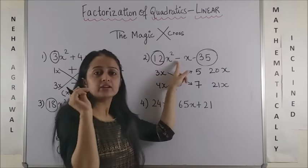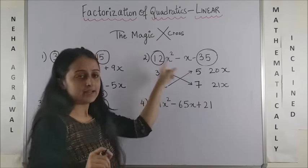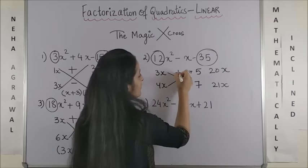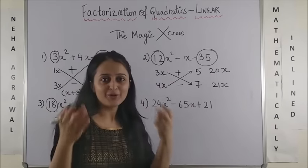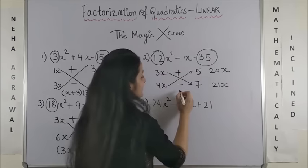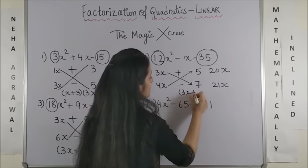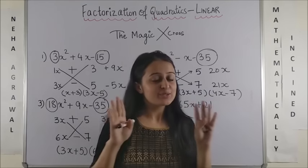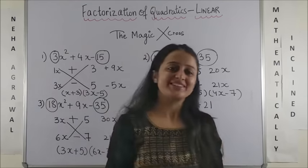if I cross multiply this one gives me 21x and if I cross multiply I get a 20x over here. Now, you need the overall negative sign. So, that means the bigger factor would be negative and the smaller one would be positive. Bingo, you've nailed it. So, the answer is 3x plus 5 and 4x minus 7. Wasn't this super simple? Have a look.